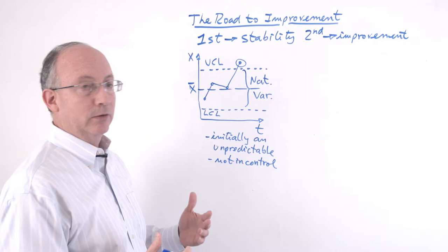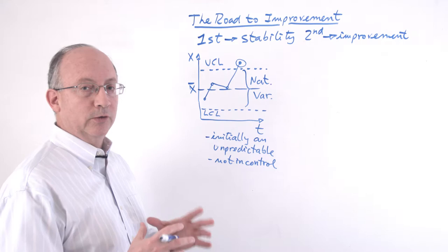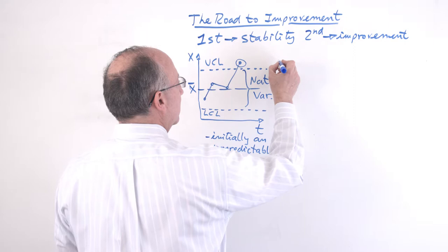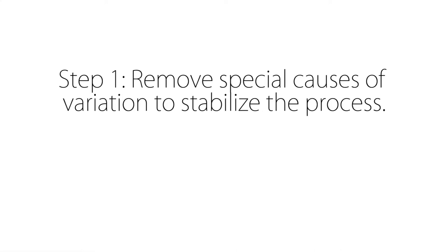So, our first task is going to be to turn this into a process that is in control, where all the variation that we see is just due to the system of common causes and there are no special causes. That would look more or less like this if we were to kind of continue this chart in control over here with the same broad parameters and indicators of performance.